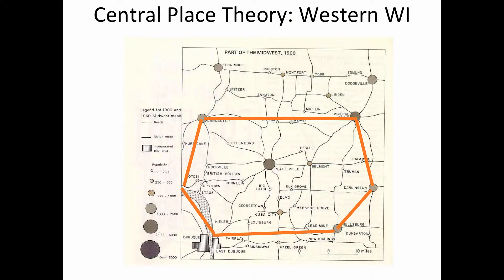Here's an example of Central Place Theory in western Wisconsin, where we can see the central place being Platteville, Wisconsin, surrounded by some lower order cities. You can also see the smaller cities surrounding it, and there is a relative hexagon shape. This line right here is the border between Wisconsin and Iowa, which does disrupt the pattern.